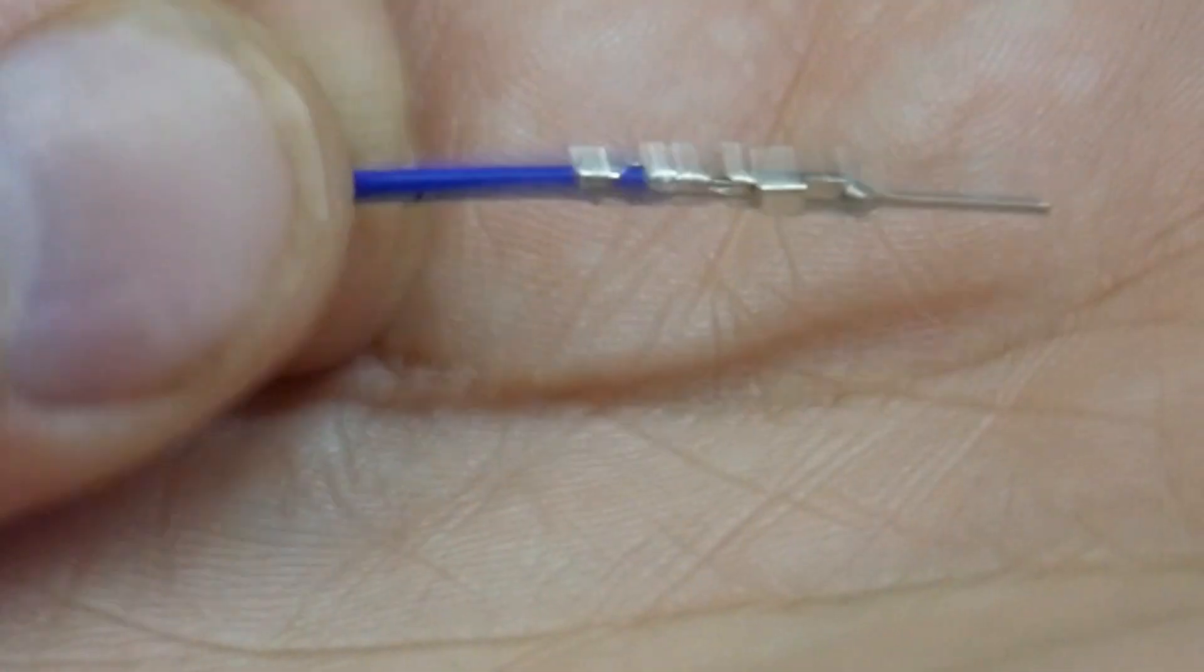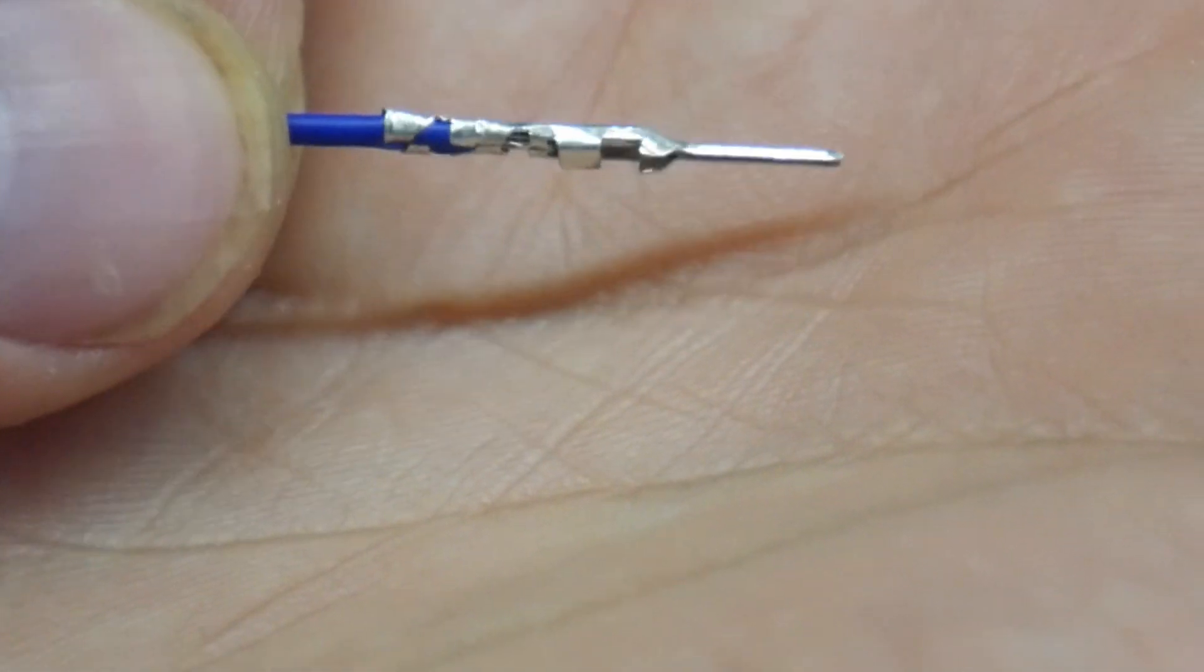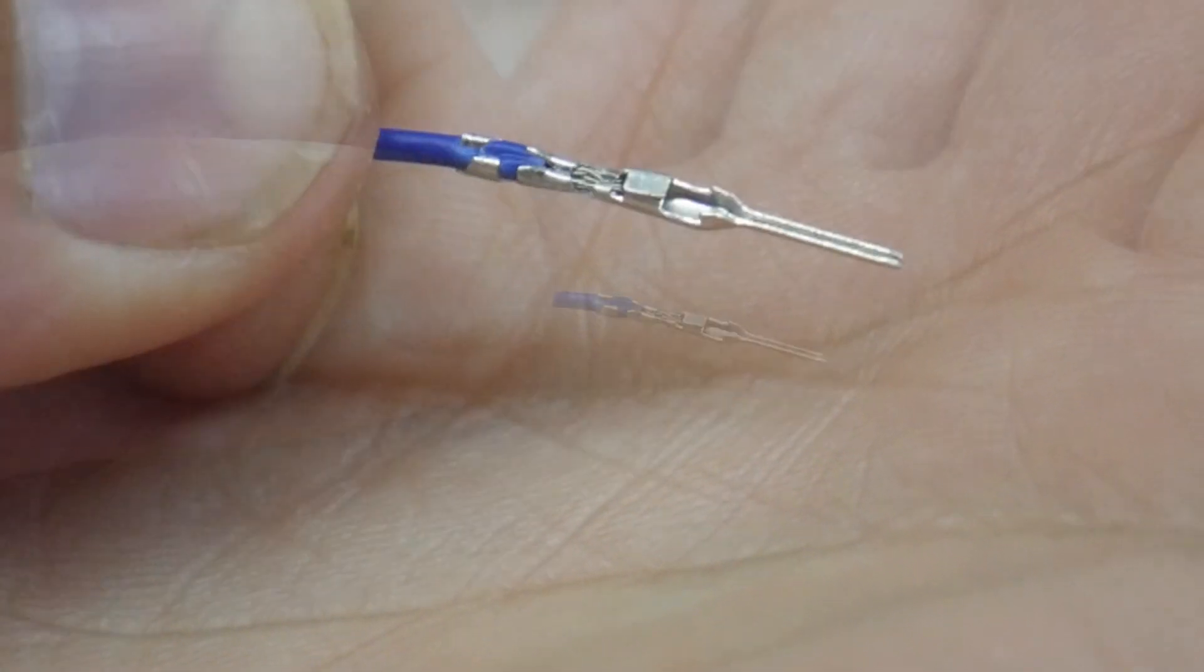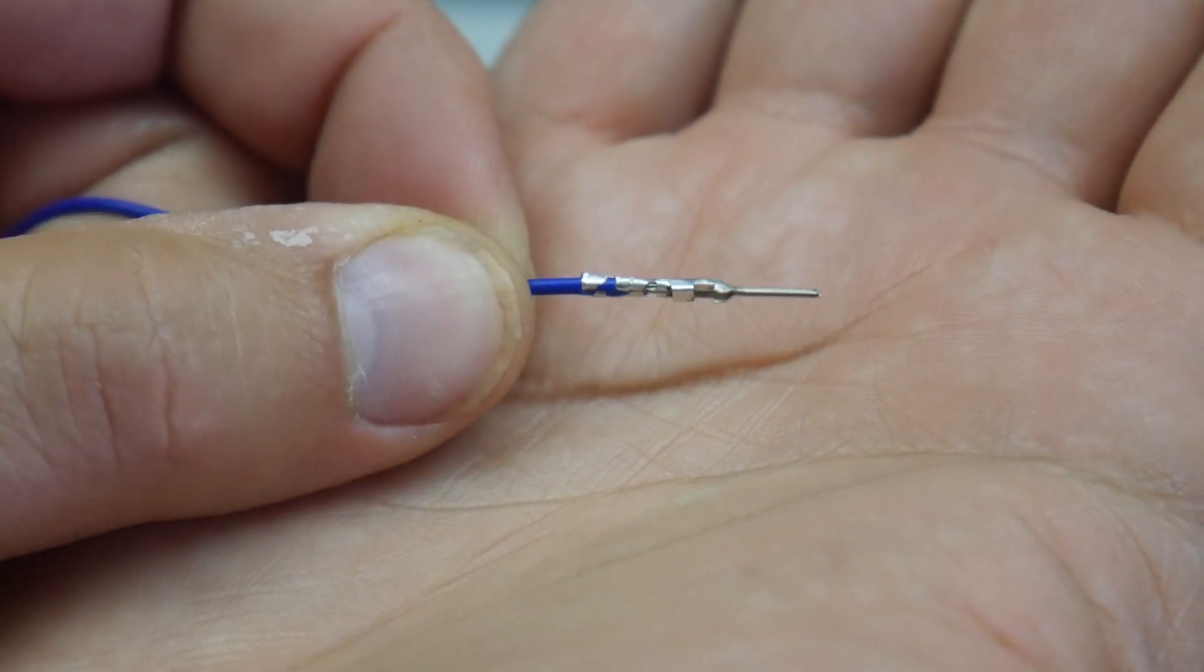You can see the bottom part down here is crimped into the insulation and the middle part right next to it is gripped on nothing but wire. This ensures we have a very good connection between the wire and the connector.